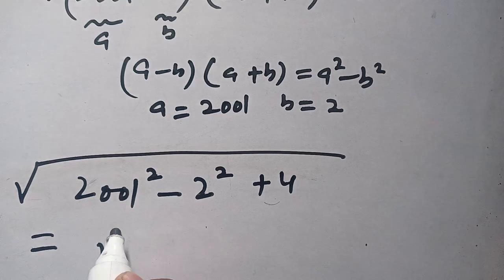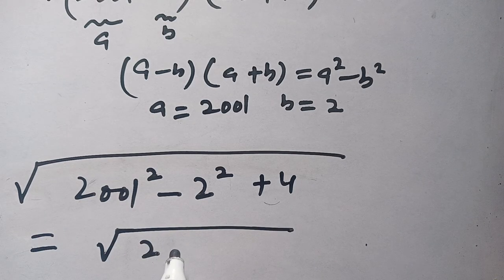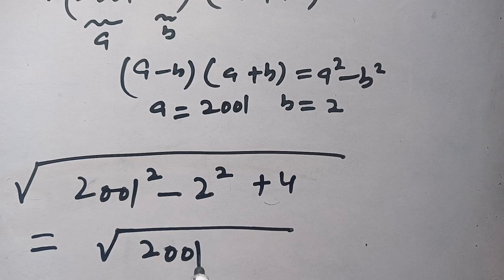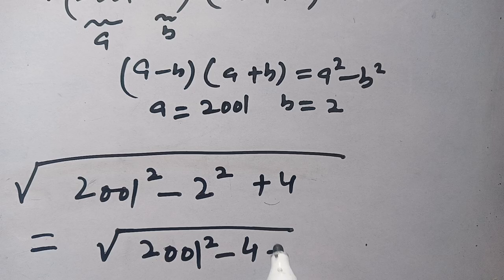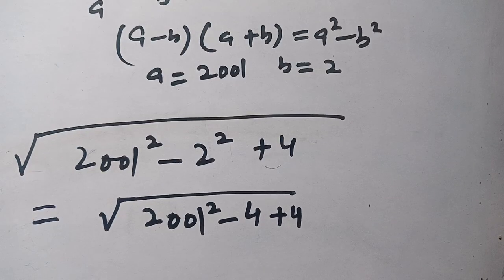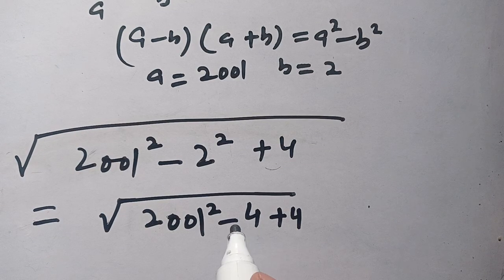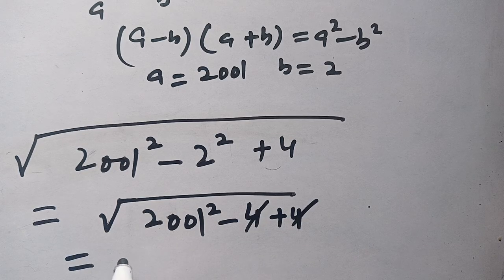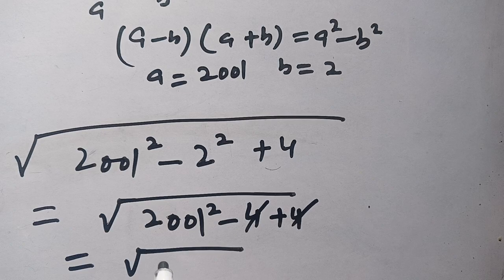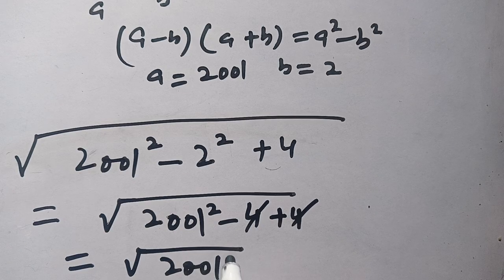Now in the next step, we can write it as √(2001² - 2²), which becomes 4, and plus 4. Now this plus 4 and minus 4 can be cancelled out, and our remaining term is √(2001²).